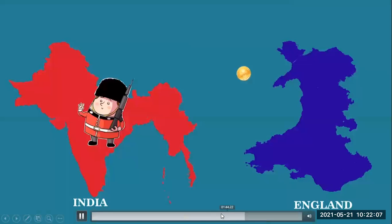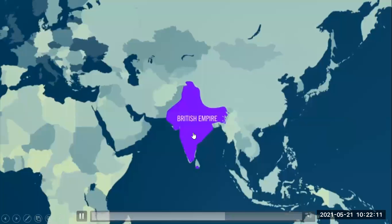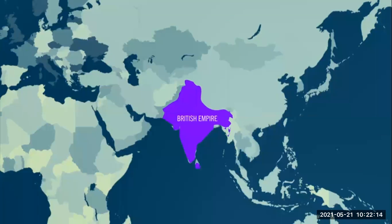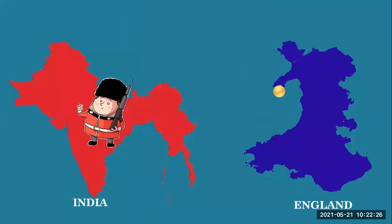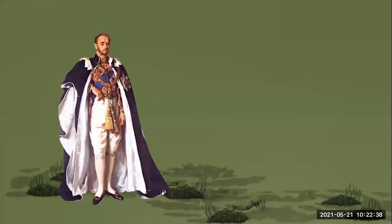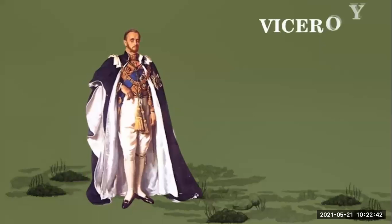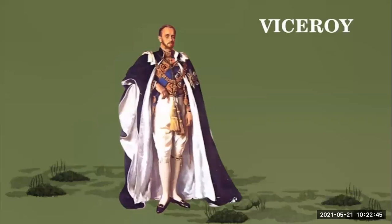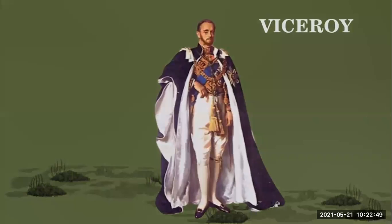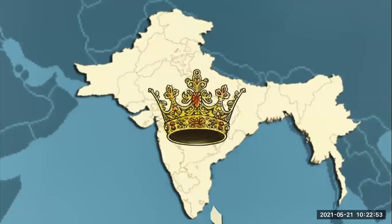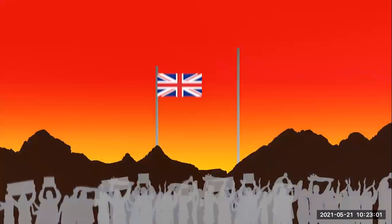The trading company slowly became the center of political power in India. With the blessings of the British, the company started ruling the country with the help of the Governor General, later known as the Viceroy. The end of company rule came with the mutiny in 1857, when the Queen decided to rule directly. From 1858, the British government directly ruled India.